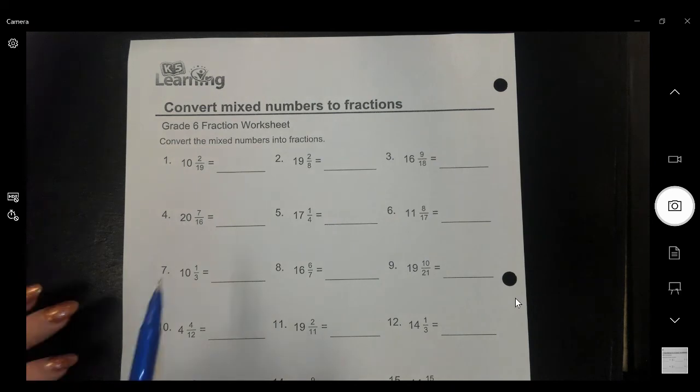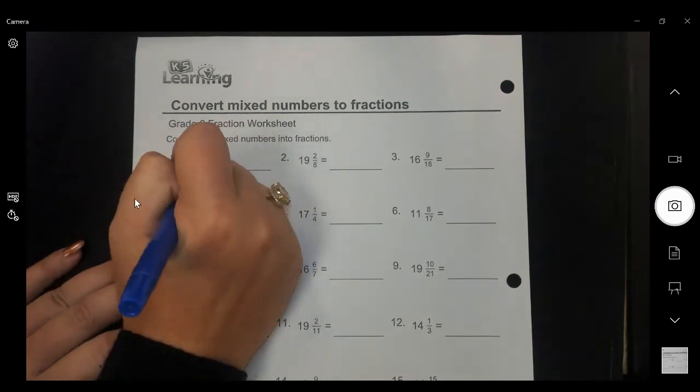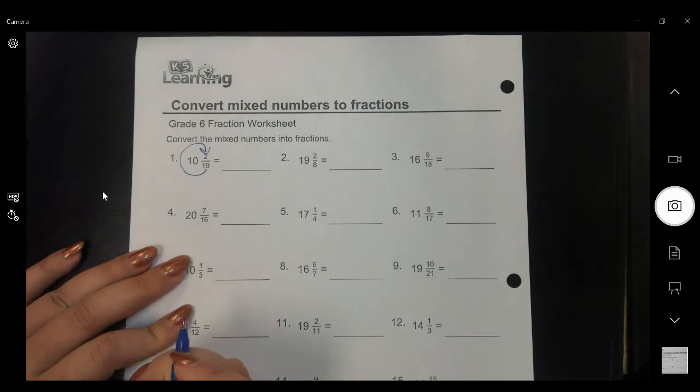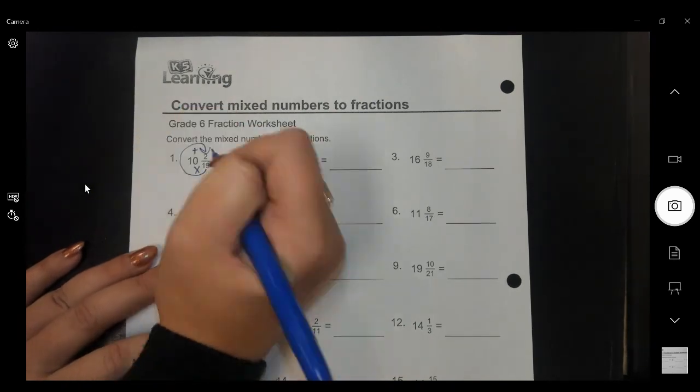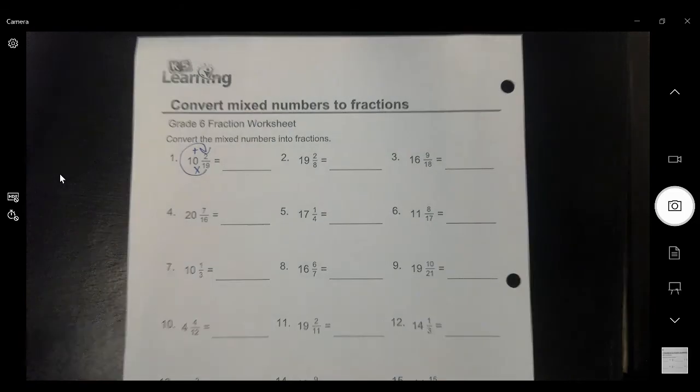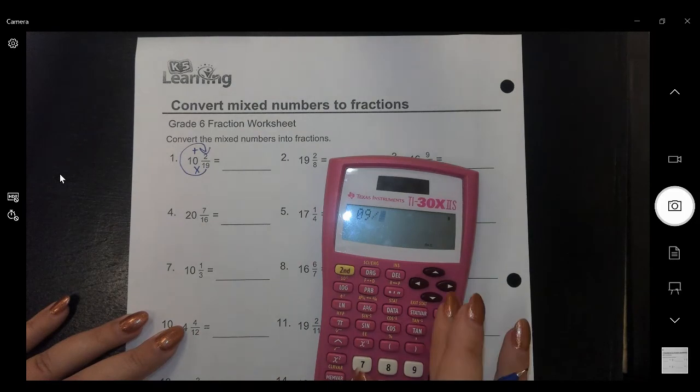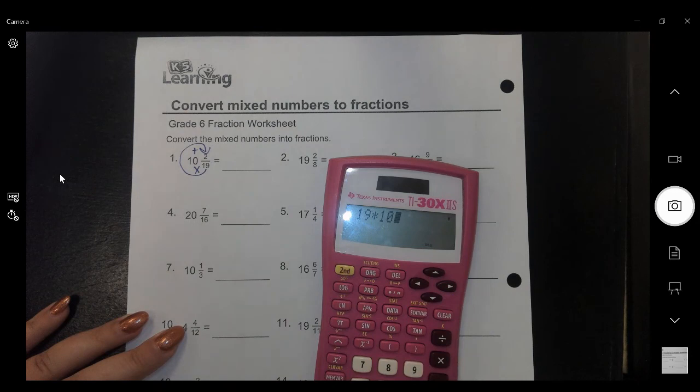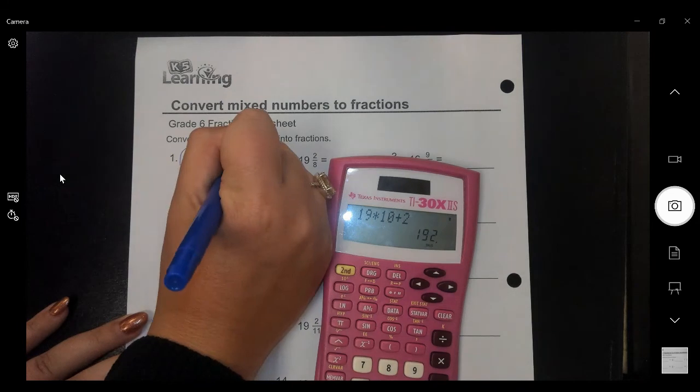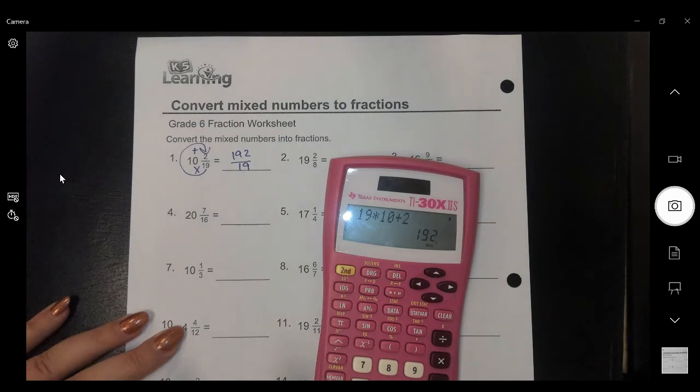Converting between a mixed number to an improper fraction is pretty easy. All you have to do is go around the world, and you're going to multiply and then add. So I'm going to put in my calculator 19 times 10 plus 2, and that's going to give me 192. And then I keep the denominator the same, and that's all we have to do.